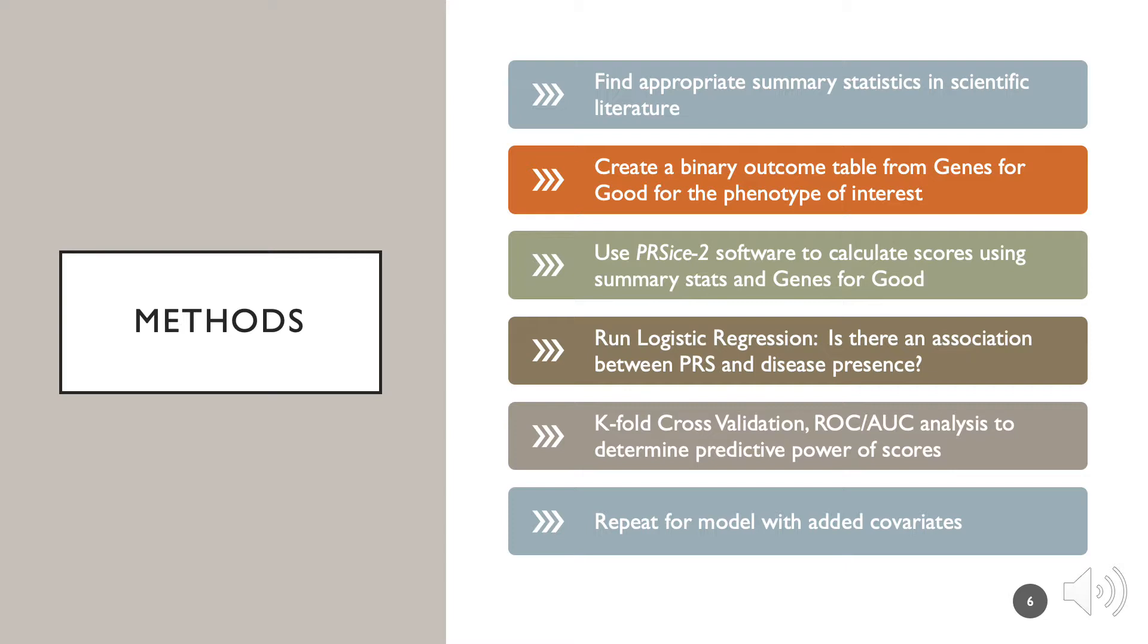Next, we ran PRSice2 software to calculate a score for each individual in Genes for Good. PRSice2 also accounts for redundancies in the data by performing a genetic method called linkage disequilibrium. We then ran a myriad of statistical tests to determine the predictive power of our scores. Most notably, we ran logistic regression to test for an association between PRS and disease presence, and K-fold cross-validation and ROC-AUC analysis to determine the predictive capacity of our scores. We then repeated these steps for various models with different combinations of covariates.